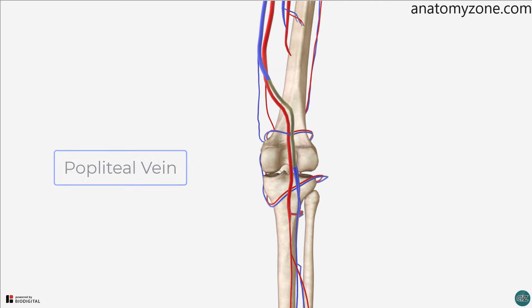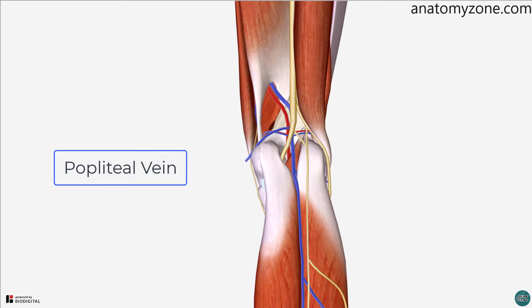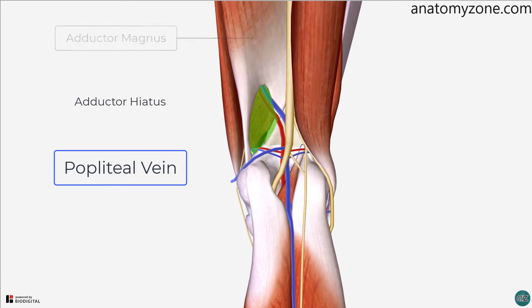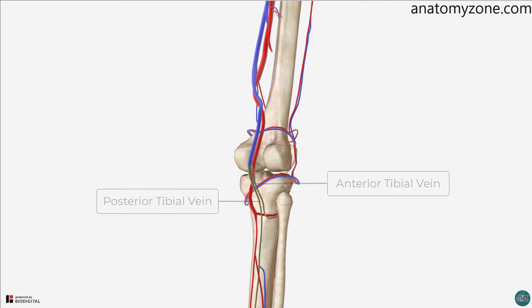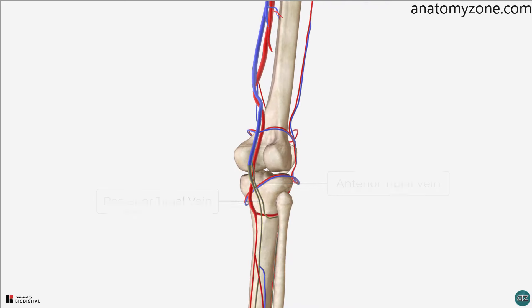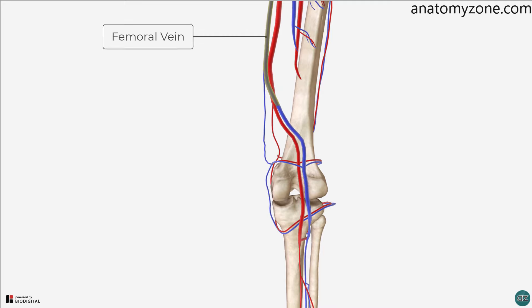The popliteal vein is superficial to the popliteal artery and exits the popliteal fossa superiorly, passing through the adductor hiatus within the adductor magnus muscle to enter the anterior compartment of the thigh. It receives blood from the anterior and posterior tibial veins and drains to the femoral vein.